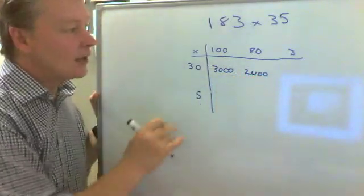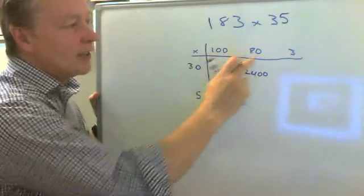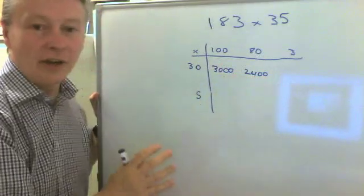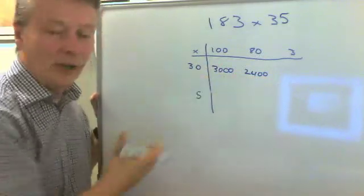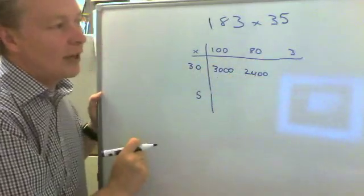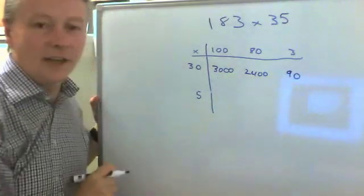You're going to be very careful here to make sure that you remember that tens multiplied by tens, or one zero there and one zero there, is going to give us two zeros at the end of that small part of the calculation. 30 multiplied by 3 is 90, so I'm going to put 90 in there.